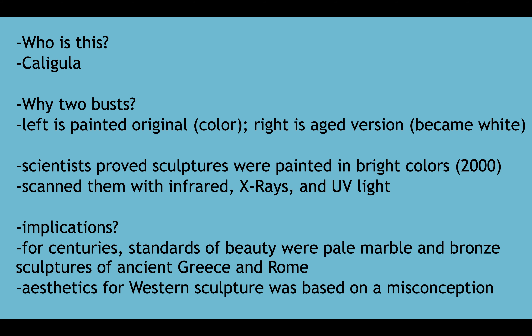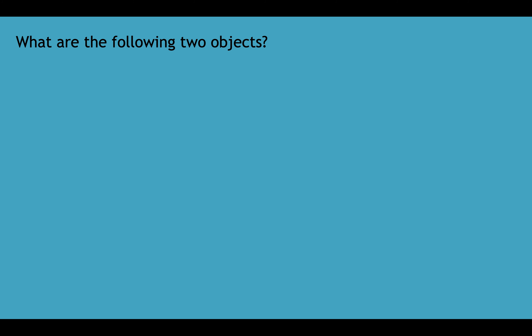What is the implication? For centuries, the standards of beauty were the pale marble and bronze sculptures of ancient Greece and Rome. As a result, the aesthetics for Western sculpture were based on a misconception. When we go to a museum we equate beauty with pale marble or bronze, not the original colors — we've defaulted to a white standard of beauty.